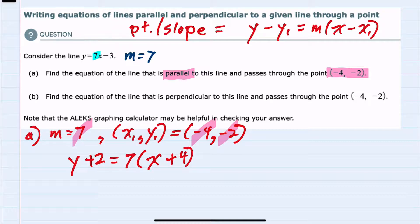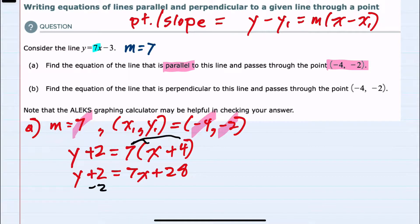Now that we have the equation we can simplify by first distributing the 7 on the right-hand side. 7 times x is 7x, 7 times 4 is 28.